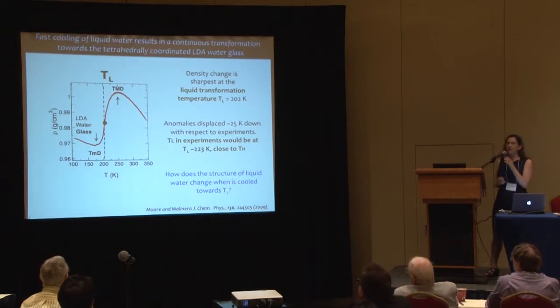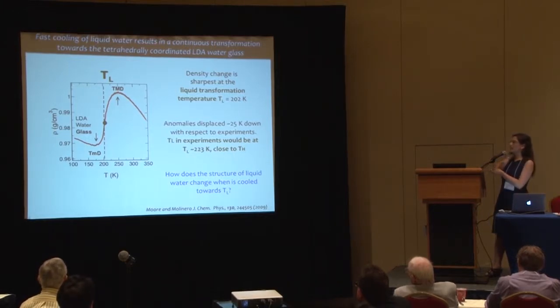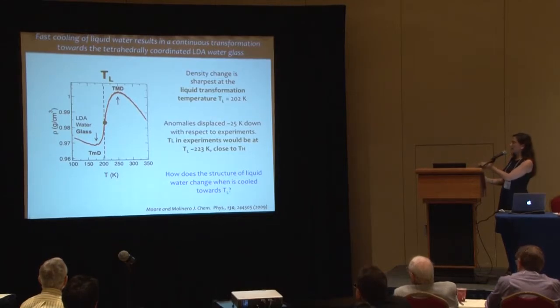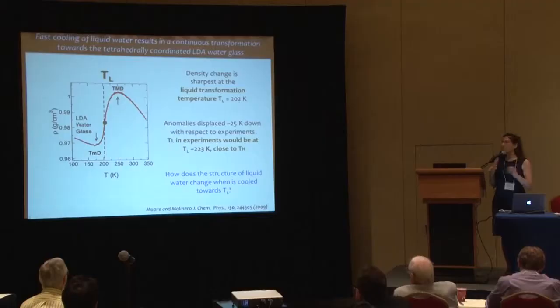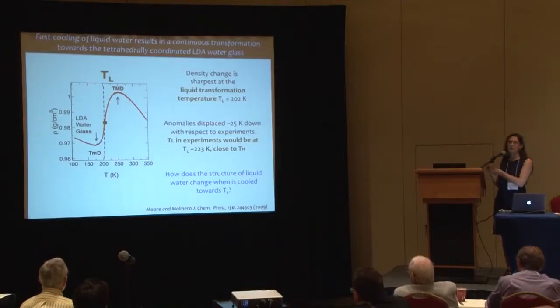When we consider the anomalies of water — I mentioned a density maximum — here I show what happens to the density of liquid water on cooling from relatively high temperature down to the glass. There is a temperature of maximum density, shifted about 25 degrees below the experimental value in this model. Then there is a very sharp decrease in density. The point I call TL is the temperature of the liquid transformation, where the liquid goes into a low-density state which on the other side is already a glass.